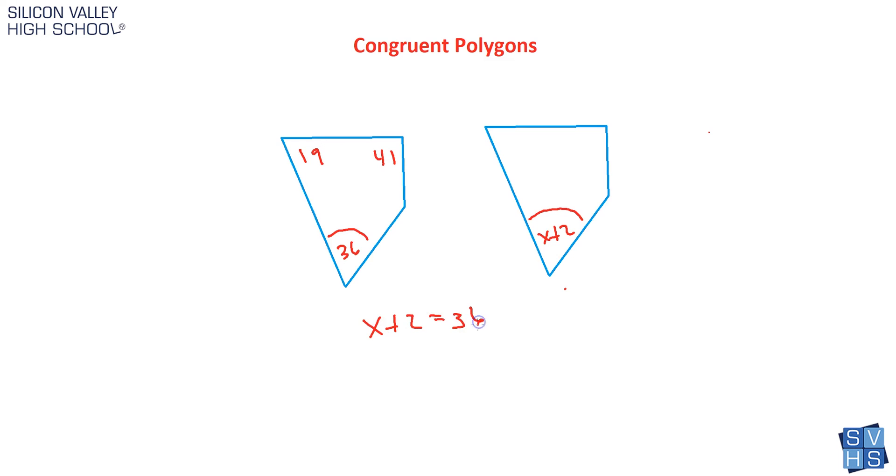Then I'm done. Do a little math: minus 2 minus 2, x equals 34, and that's my answer. The first part, the hard part, is knowing that congruent polygons have corresponding angles that are congruent, and then the math is pretty easy.